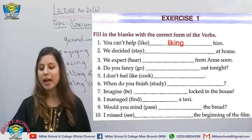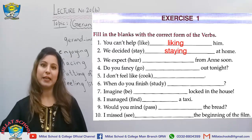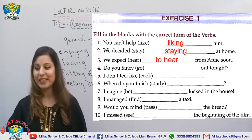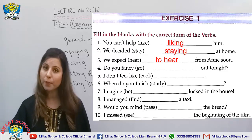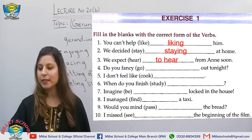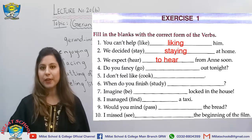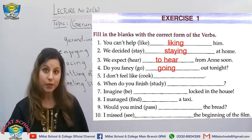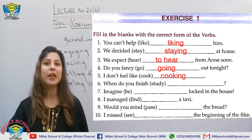Number two: 'We decided staying at home' — this is also a gerund. Number three: 'We expect to hear from you soon' — this is your infinitive, adding 'to' with the first form. Number four: 'Do you fancy going out tonight?' — this is an ongoing situation, so we add -ing, making it a gerund. Number five: 'I don't feel like cooking' — again an ongoing, vivid situation.